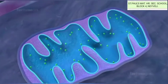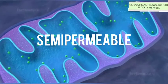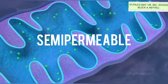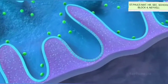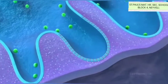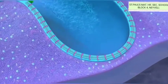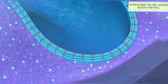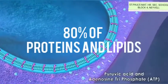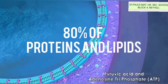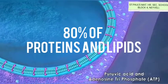The inner mitochondrial membrane is a semipermeable membrane and regulates the passage of materials into and out of the mitochondria. It is rich in enzymes and carrier proteins, and consists of 80% of proteins and lipids.